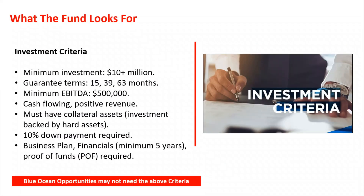Here's what the fund looks for as a guideline: the minimum investment is 10 million dollars, so if you need that or more, send me the presentation. Guarantee terms range from 15 to 63 months, minimum EBITDA is $500,000, and the business must be cash-flow positive. There must be collateral assets — the investment is backed by hard assets — and a 10% down payment is required. You must have a business plan and financials. Please do not just send me one page. NDAs and proof of funds can come later; what we need first is the minimum information and financials.